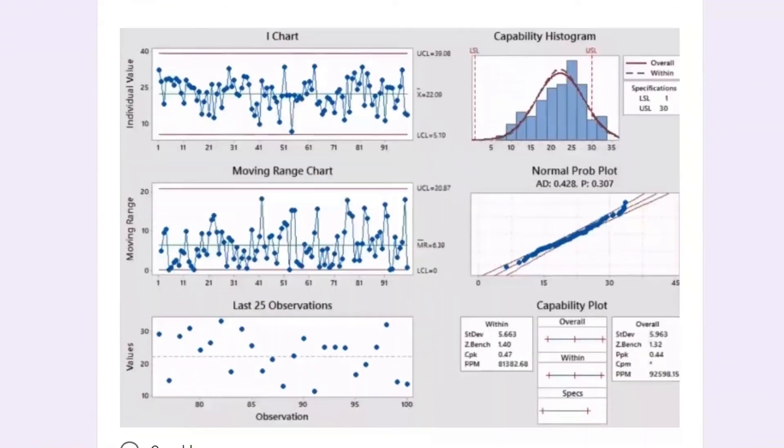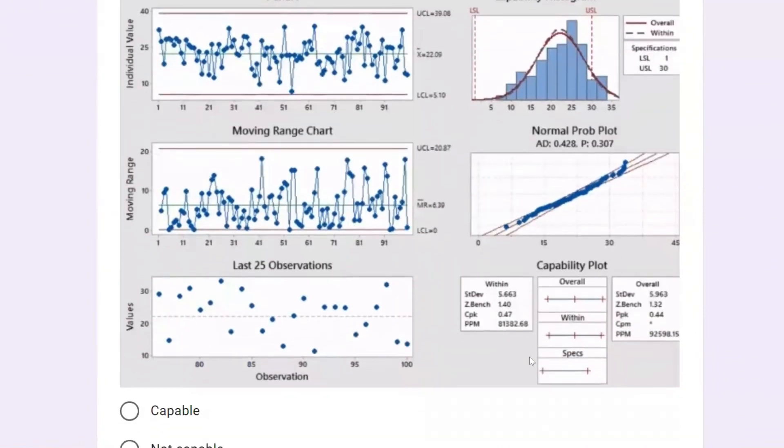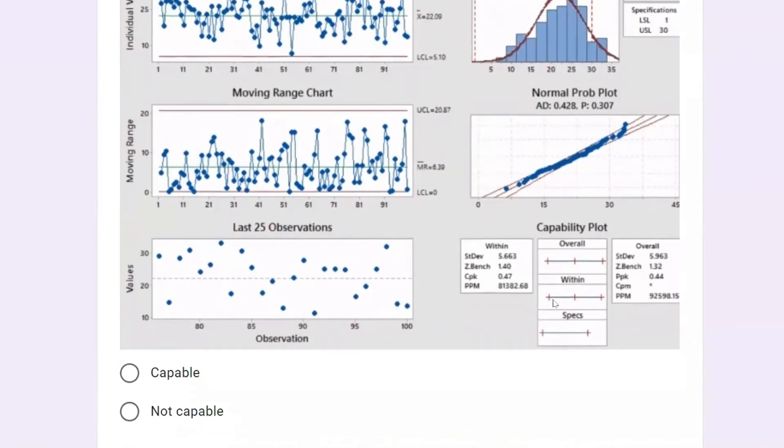If you look at the process behavior, this is the spec and there are outliers here and also here. Cpk equals 0.47, and in terms of Z-bench, the sigma value is 1.4. So definitely the process is not capable. Why? If you are producing 1 million opportunities, there will be chances that 81,382 can go wrong, so not capable.